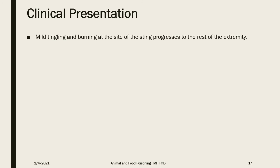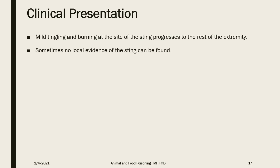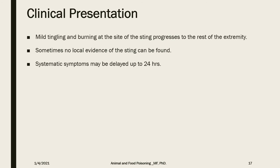Regarding clinical presentation, the sting initially causes mild tingling or burning sensation at the site, which may spread to the rest of the extremity if a limb is affected — a common anatomical site. Sometimes there is no visible evidence of the sting, or only an edematous lesion or small reddish circle on the skin. Systemic symptoms may take up to 24 hours to develop.